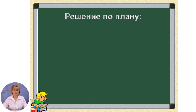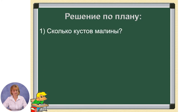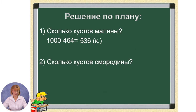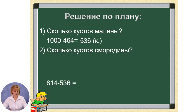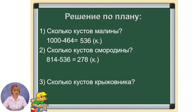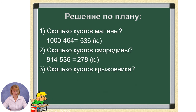Запишем решение задачи по плану. Первый вопрос: сколько кустов малины? 1000 минус 464 равно 536 кустов. Второй вопрос: сколько кустов смородины? 814 минус 536 равно 278 кустов. Третий вопрос: сколько кустов крыжовника? 464 минус 278 равно 186 кустов.